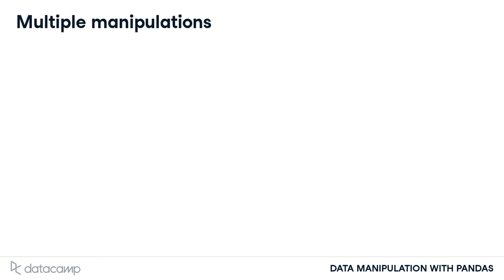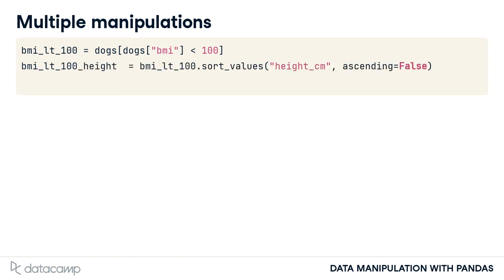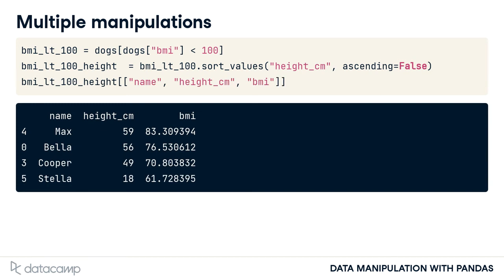The real power of pandas comes in when you combine all the skills you've learned so far. Let's figure out the names of skinny, tall dogs. First, to define the skinny dogs, we take the subset of dogs who have a BMI of under 100. Next, we sort the result in descending order of height to get the tallest skinny dogs at the top. Finally, we keep only the columns we're interested in. Here you can see that Max is the tallest dog with a BMI of under 100.